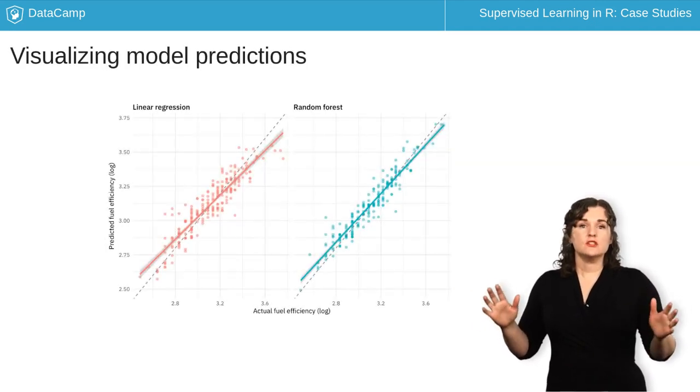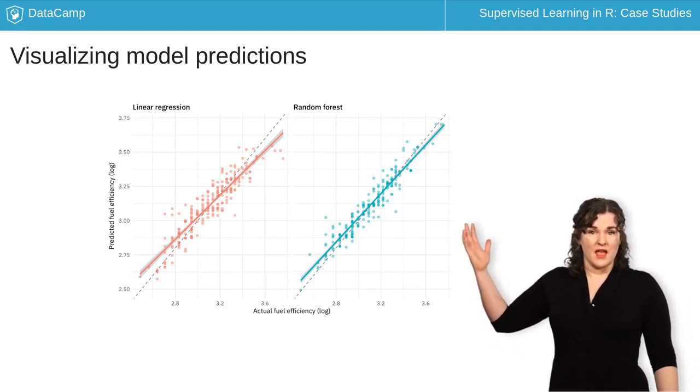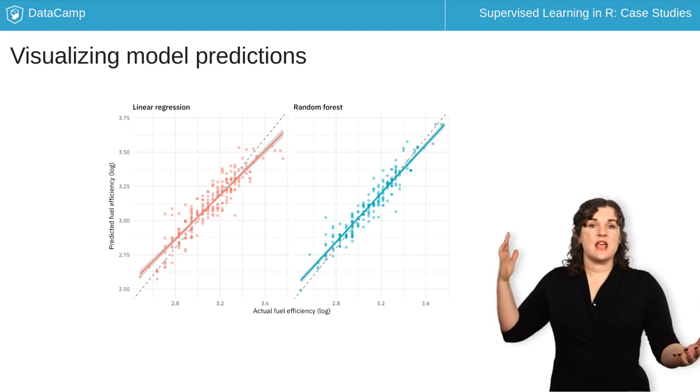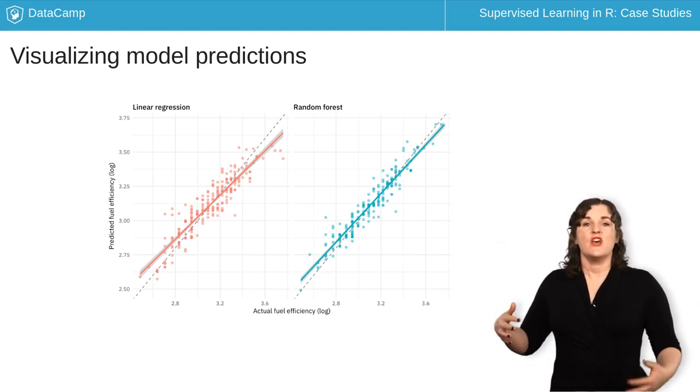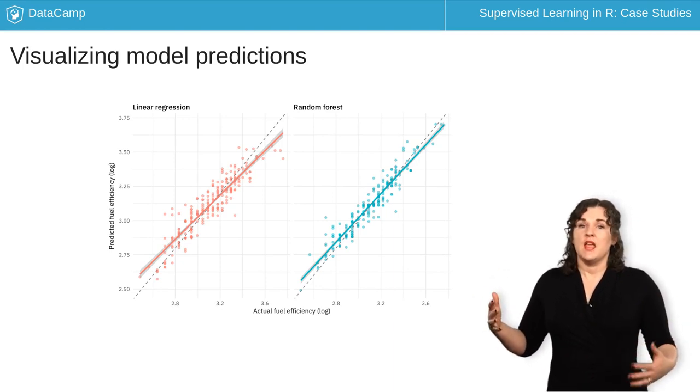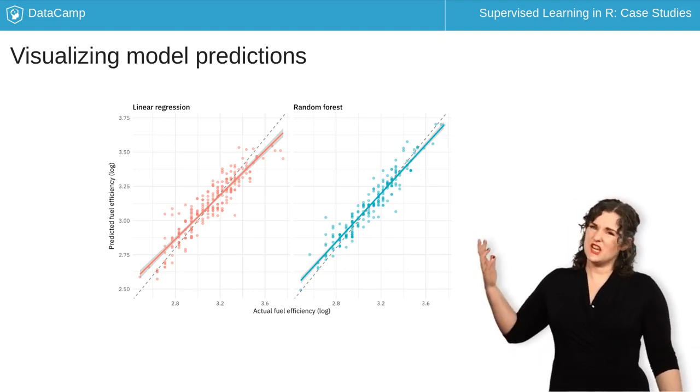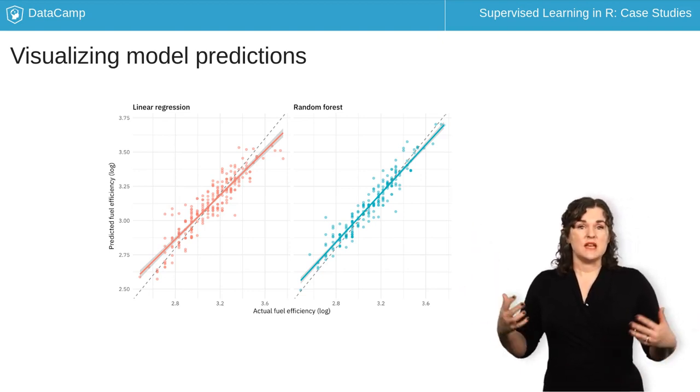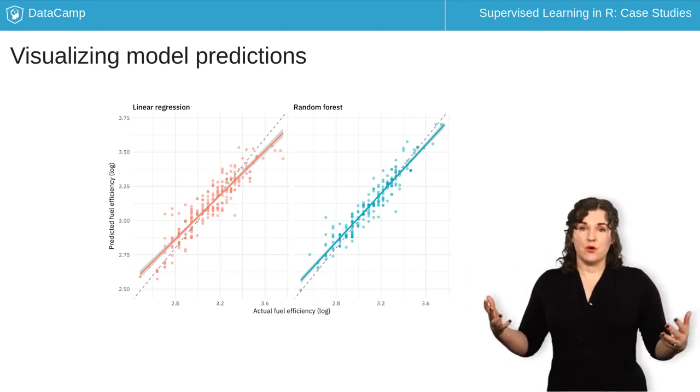In this lesson, you also are going to visualize these differences, like you see here. The x-axis has the actual fuel efficiency, and the y-axis has the predicted fuel efficiency for each kind of model. The difference between linear regression and random forest isn't huge here, but in this case, we can see visually that the random forest model is performing better.